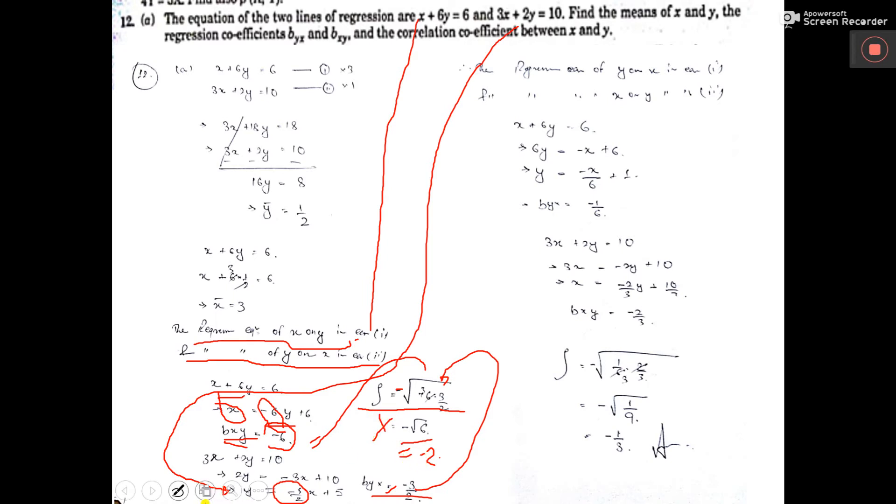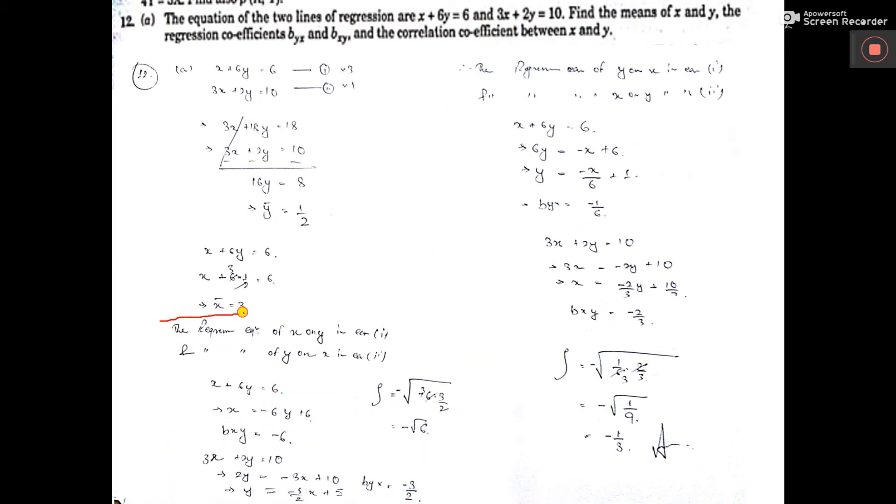So, whatever we have considered here. See, the regression equation of x on y, equation one I have considered. And regression equation of y on x, equation 2 I have considered. From there I have got rho, which is totally wrong. So, this consideration is wrong. So, we have to consider in reverse order. That means, regression equation of y on x will be equation 1. That means, from equation 1, we have to find y as subject.